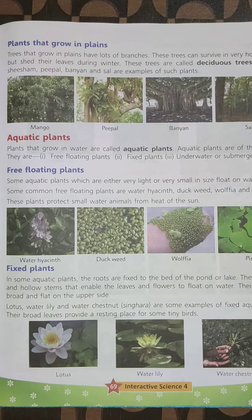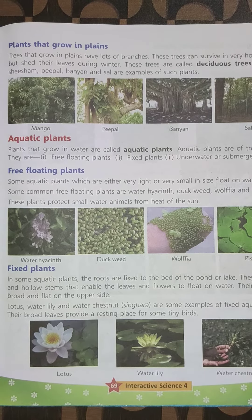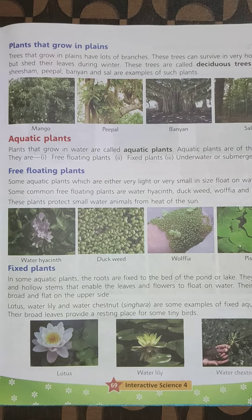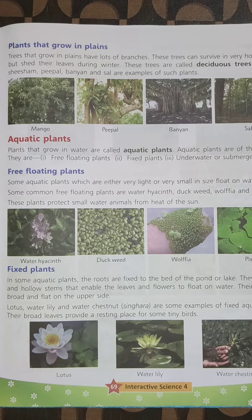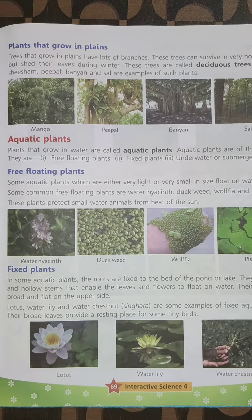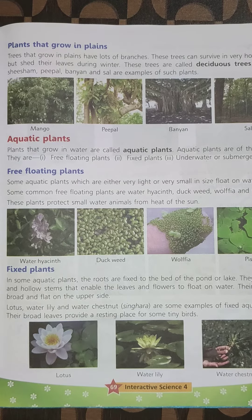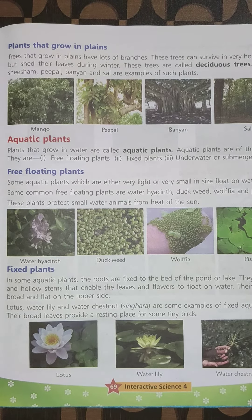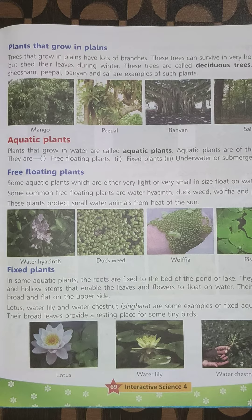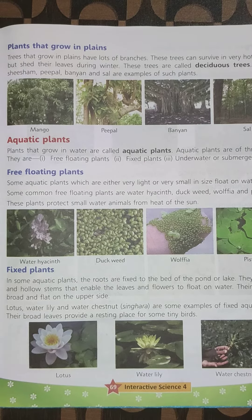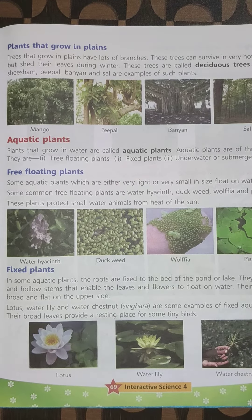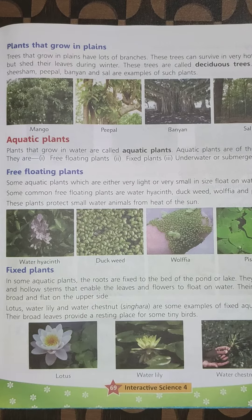Lotus, water lily, and water chestnut (singhara) are some examples of fixed aquatic plants. Their broad leaves provide a resting place for some tiny birds.